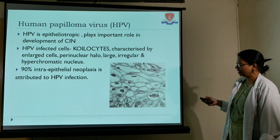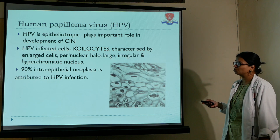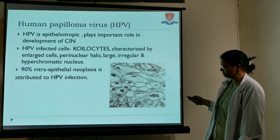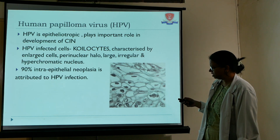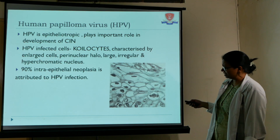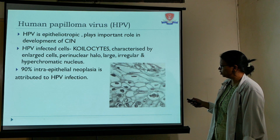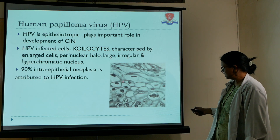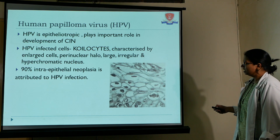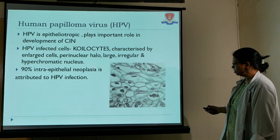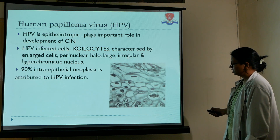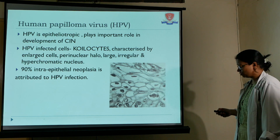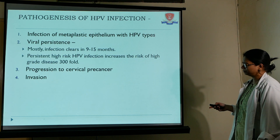HPV is epitheliotropic and plays an important role in the development of cervical intraepithelial neoplasia. Infected cells are known as koilocytes, characterized by enlarged cells, perinuclear halo, and large irregular hyperchromatic nuclei. 90% of intraepithelial neoplasia is attributed to HPV infection.